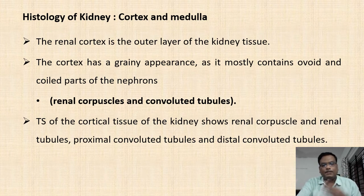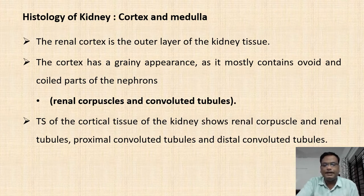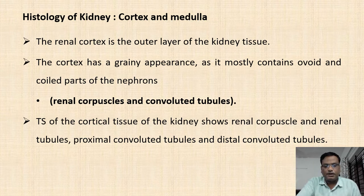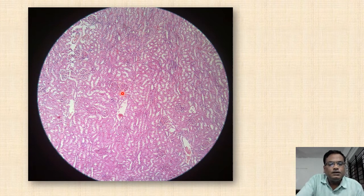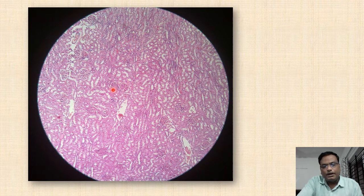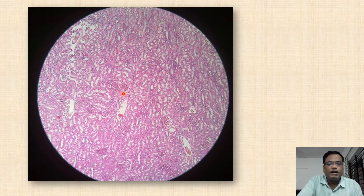The cortex part of the kidney forms the outermost layer and has a grainy appearance because it mostly contains ovoid and coiled parts of the nephrons — the renal corpuscles and convoluted tubules. In the transverse section of the cortical region, we mainly find renal corpuscles and renal tubules such as proximal and distal convoluted tubules. This is the transverse section of the kidney as seen under the microscope. The structures visible are renal corpuscles, which are nothing but the Bowman's capsules with the capillary network of blood vessels inside.